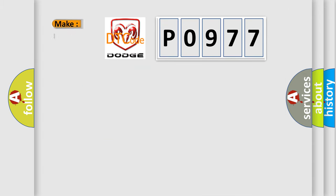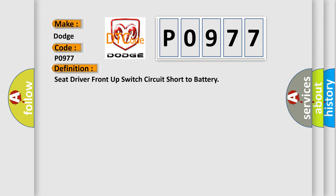So, what does the diagnostic trouble code P0977 interpret specifically for Dodge car manufacturers? The basic definition is: Seat driver front up switch circuit short to battery.